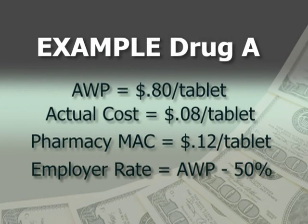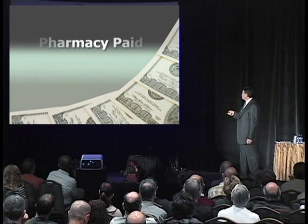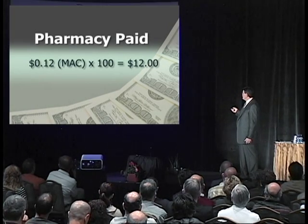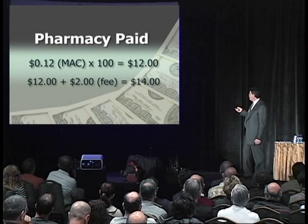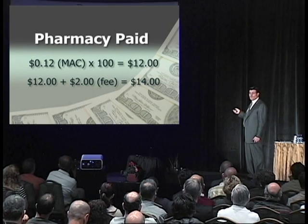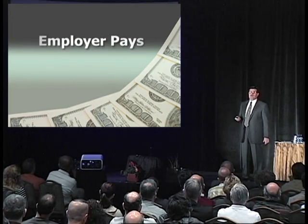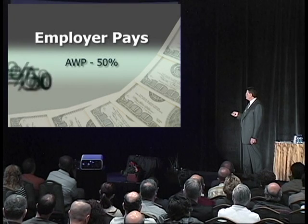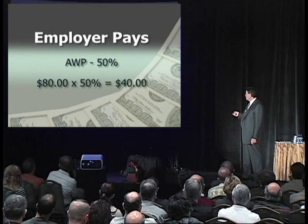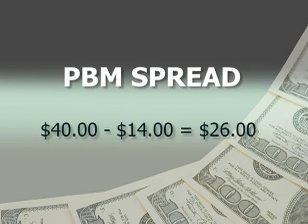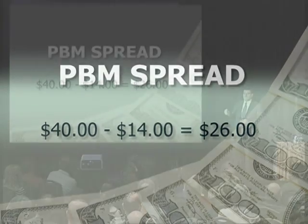There was an employer rate of AWP minus 50%. Using 100 tablets to keep the math simple: the MAC was 12 cents, so 12 cents times 100 tablets — the pharmacy would be paid $12 on the cost side plus a $2 dispensing fee, a total of $14. Now let's look at what the employer paid. The employer was on AWP minus 50%, no fee. 50% of $80 is $40. So $80 minus $40 equals $40. The PBM charged the employer $40, paid the pharmacist $14, and put $26 in their pocket just for running it through a switch.